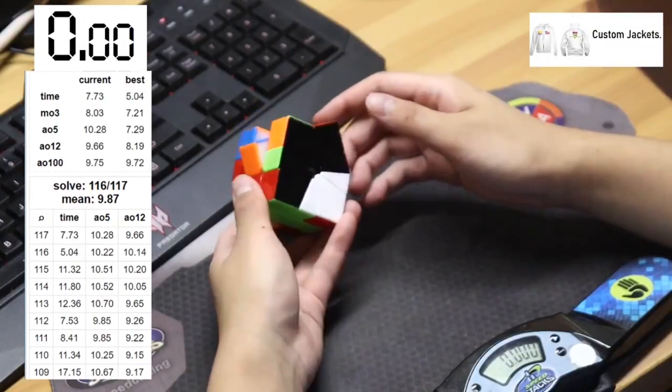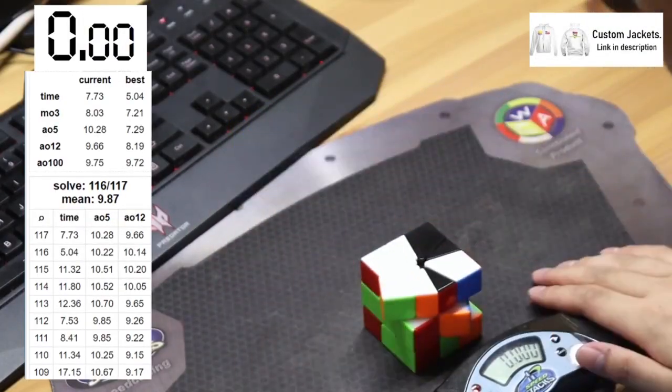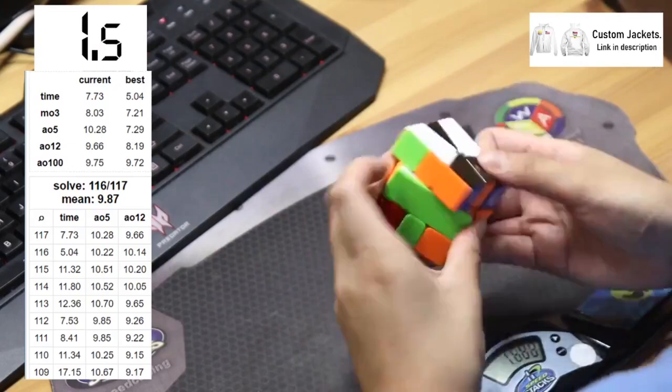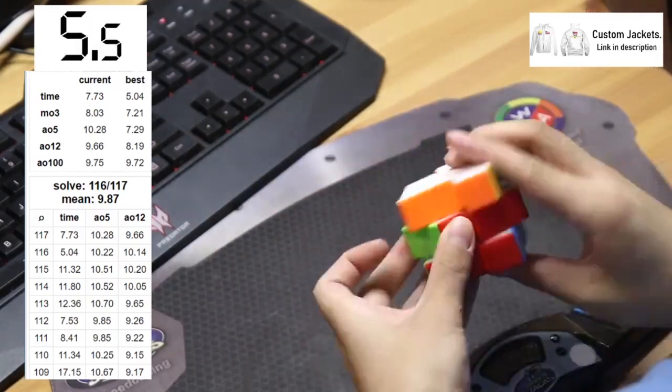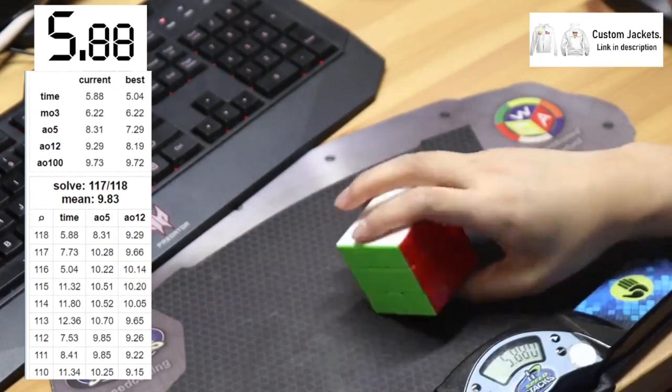So yeah, that pretty much summarizes my one hour analysis of these solves. If you want to see the document with all the notes, just check the link in the description and it should be there. Even though I am a decently fast Square-1 solver, there's still a ton I can learn from top Square-1 solvers.